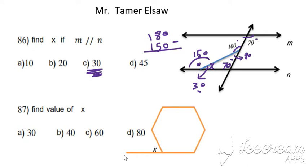Find values of x. Here hexagon, one, two, three, four, five, six. Regular hexagon. Find x. Okay, the sum of all interior angles is 720.